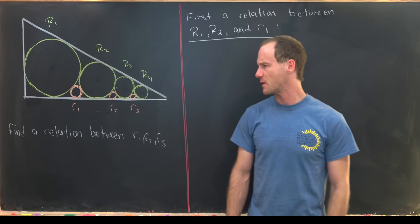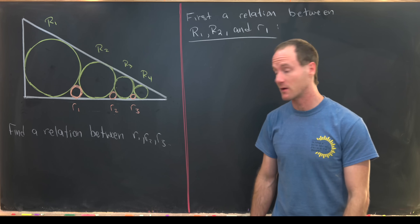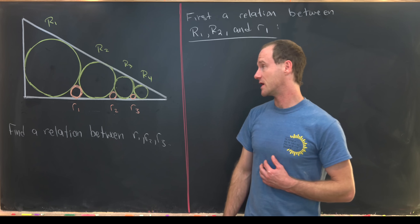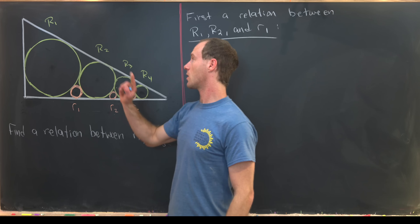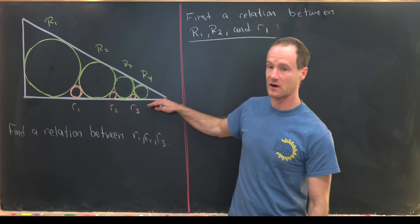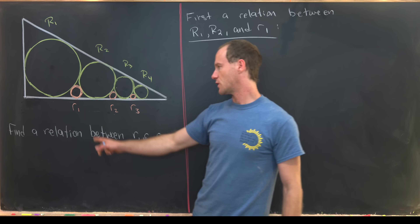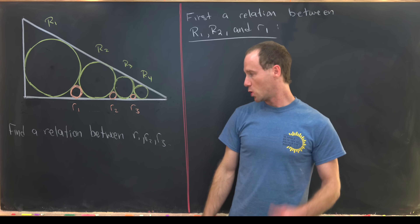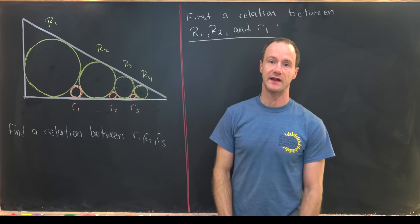Here I've got a nice geometry problem from a book called Sacred Mathematics, which is all about Japanese temple geometry problems. I've got a right triangle with four inscribed circles drawn in yellow with radii capital R1, R2, R3, and R4. Between the base of the right triangle and each of these circles I've inscribed three smaller circles with radii little r1, r2, and r3. Our goal is to find a relationship between r1, r2, and r3.